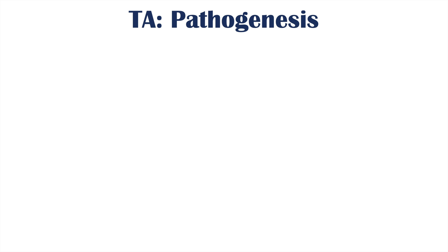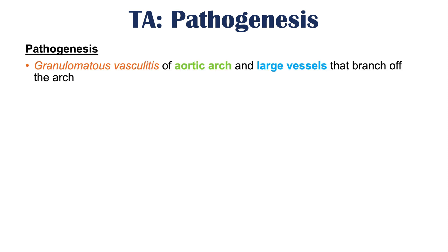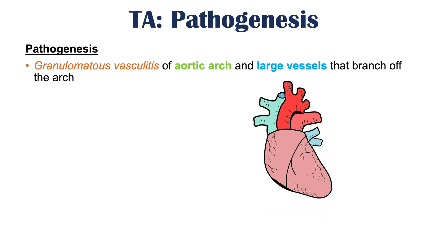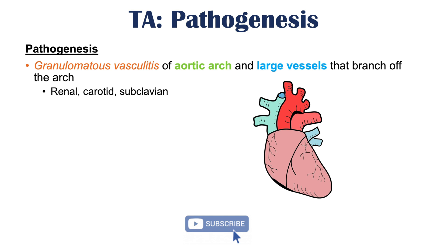Takayasu's Arteritis is a granulomatous vasculitis of the aortic arch and large vessels that branch off the arch. The vessels commonly affected include the renal arteries — the arteries going to the kidneys off the abdominal aorta — the carotid arteries, and the subclavian arteries that supply the arms. These are particularly important when considering the signs, symptoms, and complications of this condition.